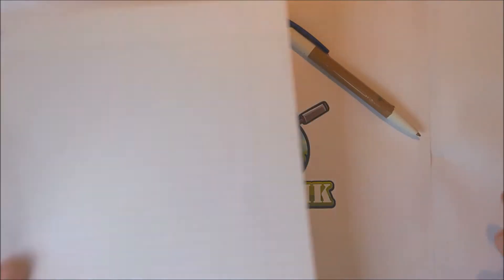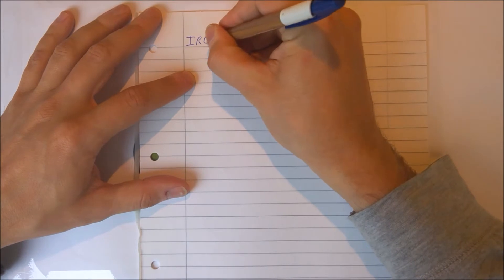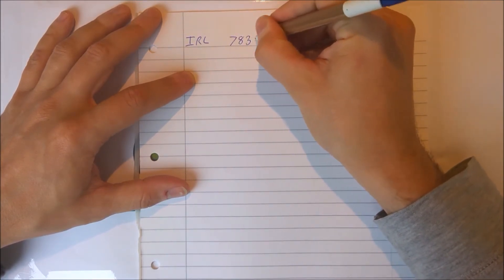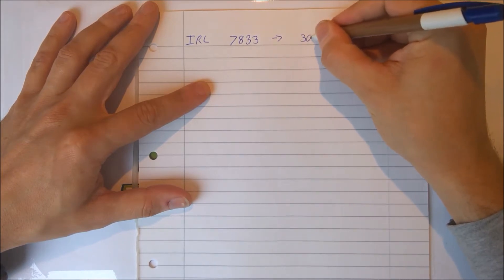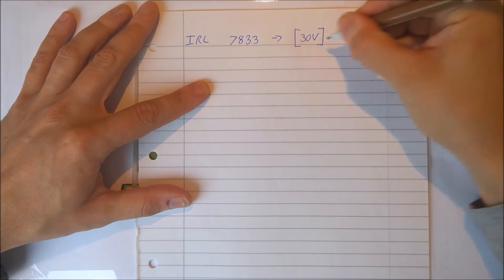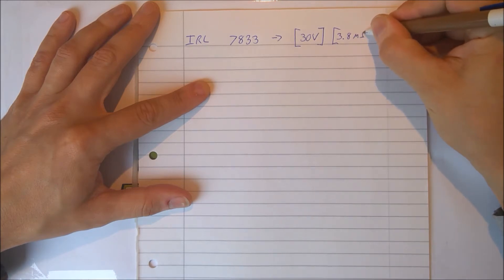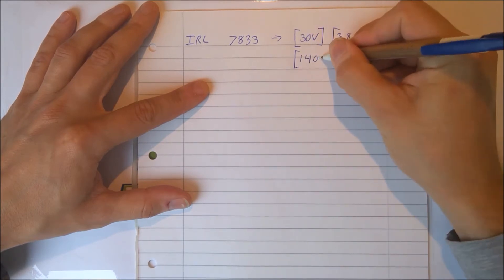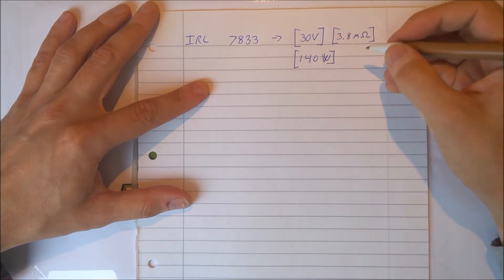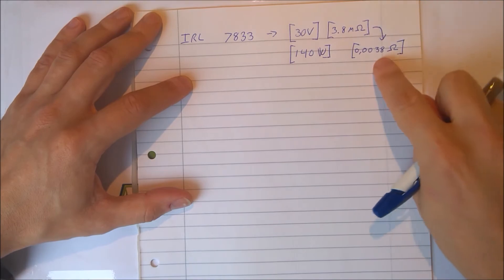To do math we need of course a pen and some paper. In the past I have been using the IRL7833 MOSFET. It can handle up to 30V. It has an internal resistance of 3.8 milliohms. It can dissipate 140W of power.